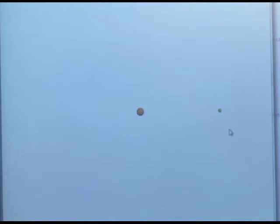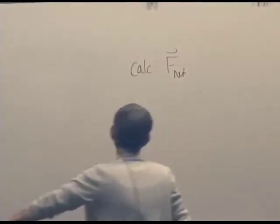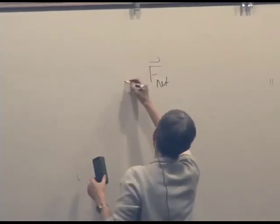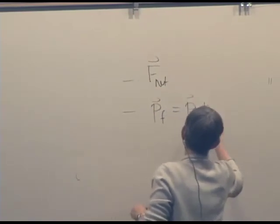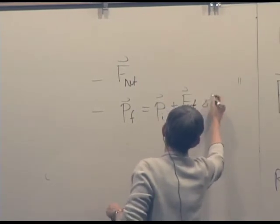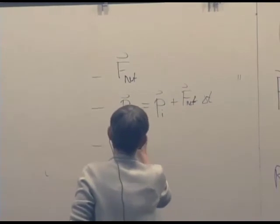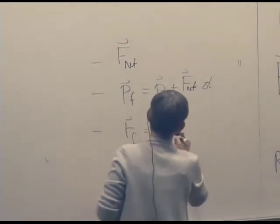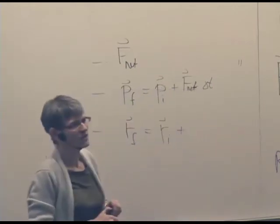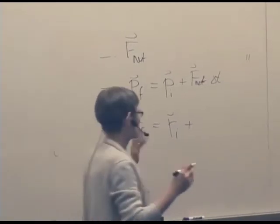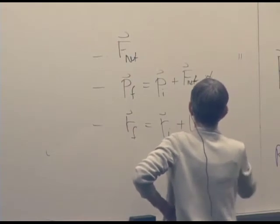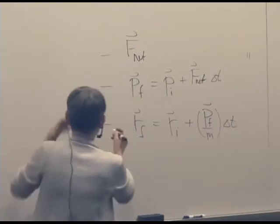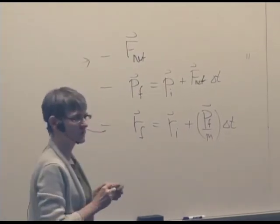Remember, we calculate the net force on an object. And then we use this to update momentum. P future is P now plus F net delta T over some time step delta T. And then we can update its position. Its new position is going to be its current position plus average velocity, which in this case, since the force is not going to be constant, we're going to call P final over the mass times delta T.